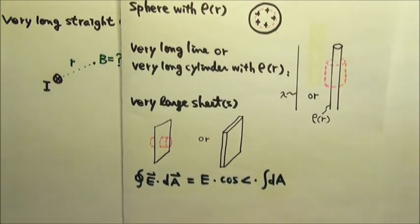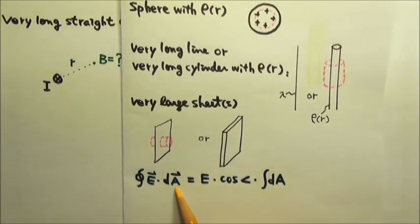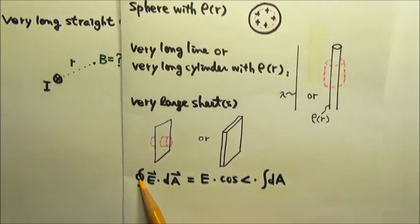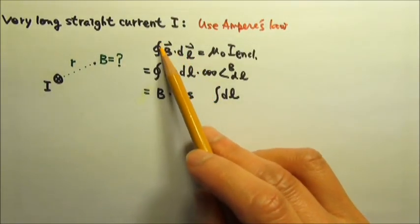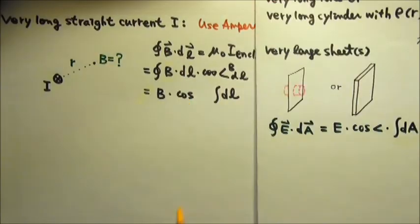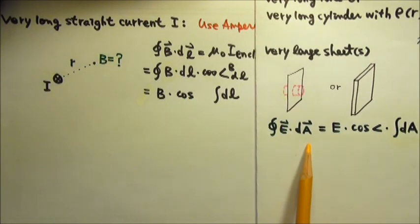Unlike Gauss's law, which involves a surface integral for a closed surface, Ampere's law involves a line integral for a closed loop. But both laws utilize symmetry.